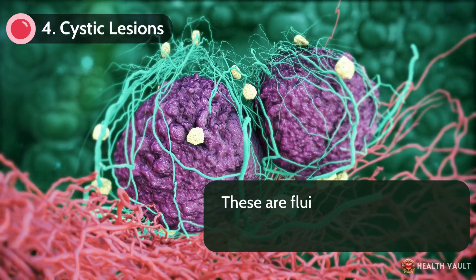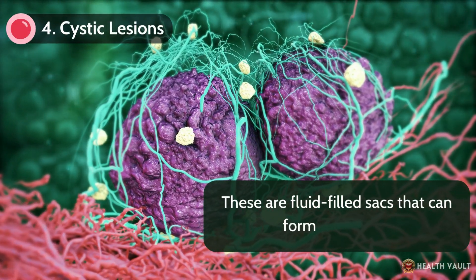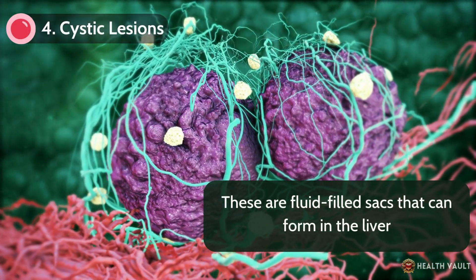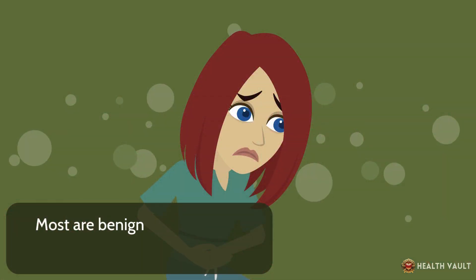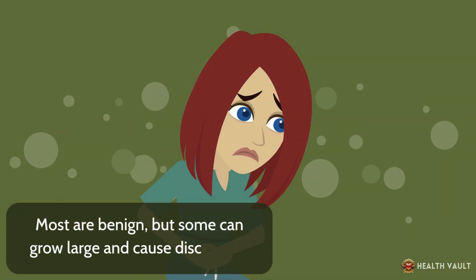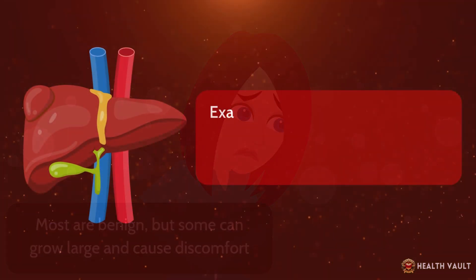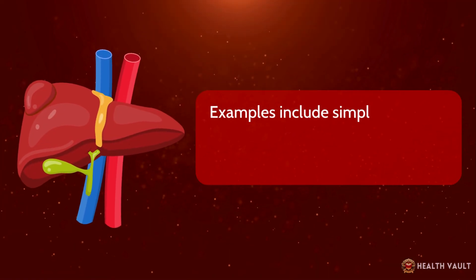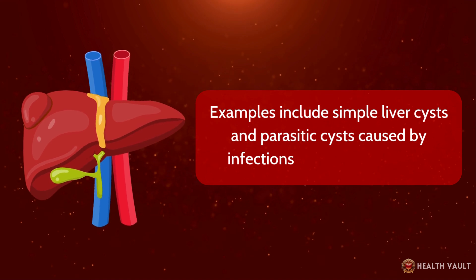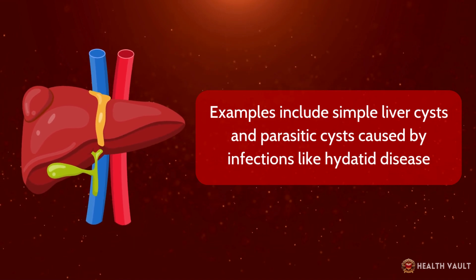Number four, cystic lesions — fluid-filled sacs that can form in the liver. Most are benign, but some can grow large and cause discomfort. Examples include simple liver cysts and parasitic cysts caused by infections like hydatid disease.